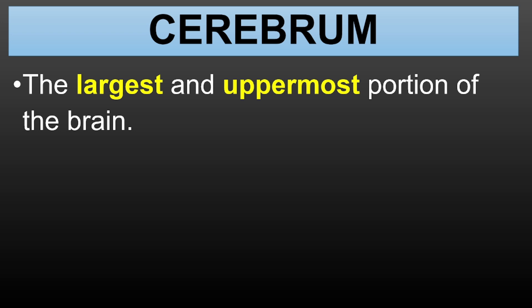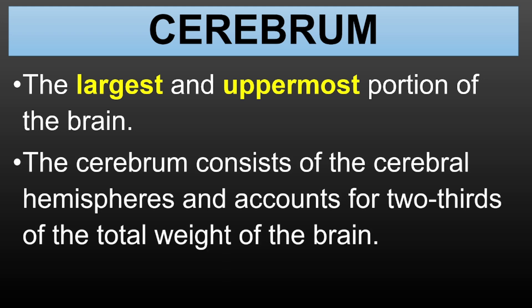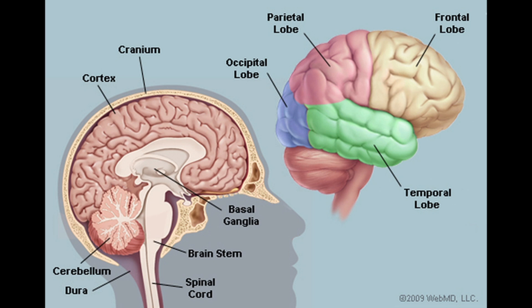Let's start with the cerebrum. It's the largest part of the brain, responsible for higher brain functions like thought and action. The cerebrum consists of the cerebral hemispheres and accounts for two-thirds of the total weight of the brain. It controls voluntary movements and also plays a key role in memory, attention, and decision-making. Think about a time when a student raises their hand to answer a question — that's their cerebrum at work, coordinating both their physical movement and their thinking. Each lobe has specific tasks, but they all work together to make sense of the world around us. For example, when students listen to a teacher, the temporal lobe helps them process what they're hearing, while the frontal lobe helps them make sense of the information and decide how to respond.